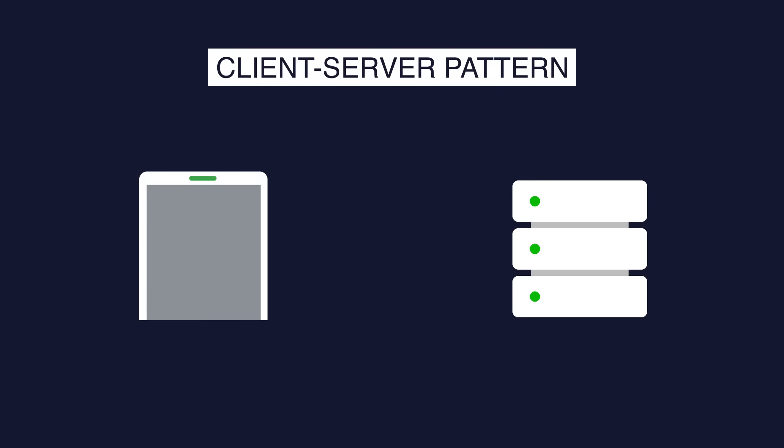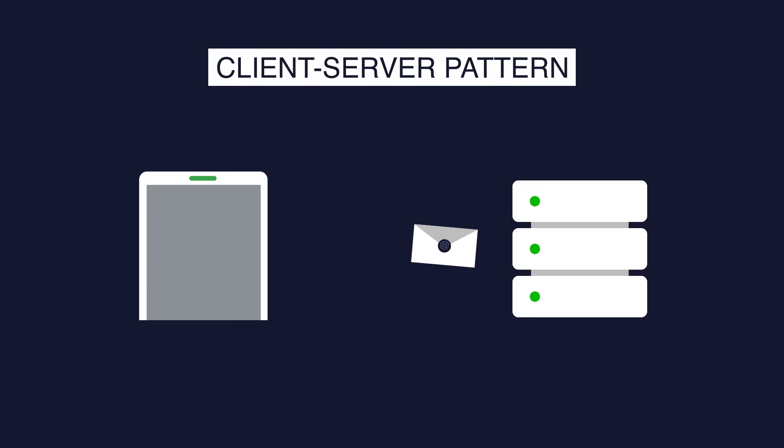On top of that, decisions about where to locate functionality — in the client or in the server — are often complex and costly to change after a system has been built. Typical real-world use cases of the client-server pattern include online applications such as email, document sharing, and banking.